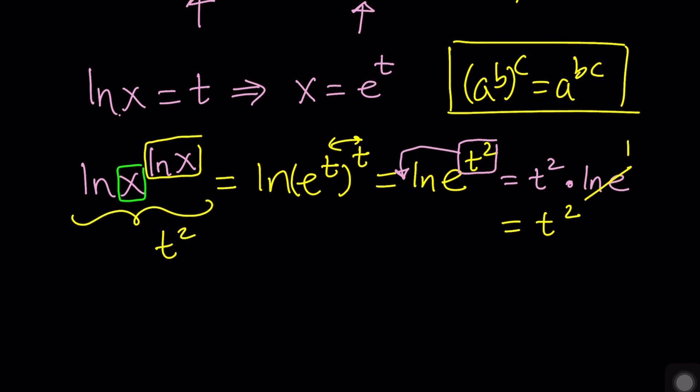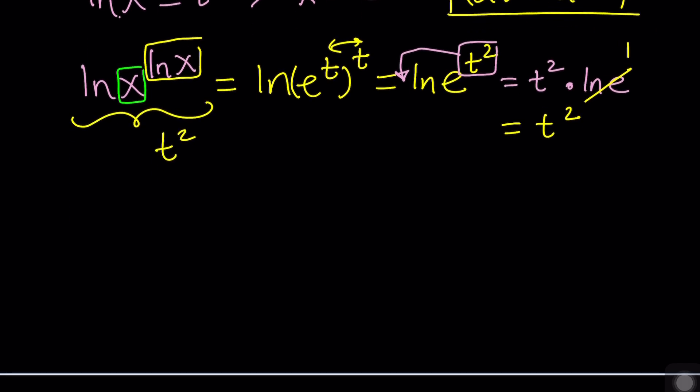Good. That's my exponent. And now I have ln(x) to the power ln(x) to the power ln(x). And this is my exponent, right? And the base is x. So, what am I going to do? I'm going to write the ln. Be careful, because don't replace ln(x) with t, because this is not ln(x). This is ln(x) to the power something. You got that? Hopefully. Okay.